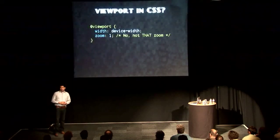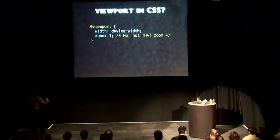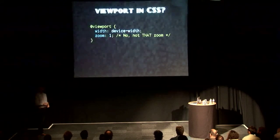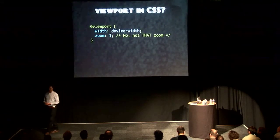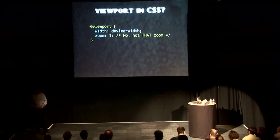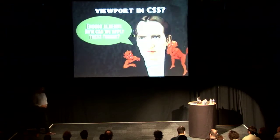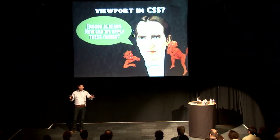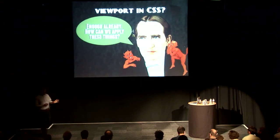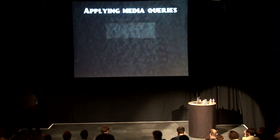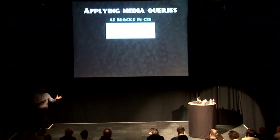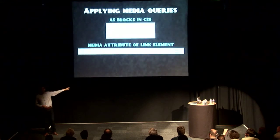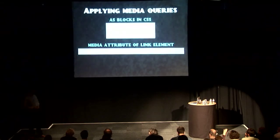Opera had a proposal to get viewport out of HTML and into CSS, which I think is not a bad idea — you put 'zoom' in there. I don't know how Internet Explorer will handle this, but it does the same thing as the meta element. So, how do we apply media queries? Here's where I want to start a little war between the performance people and everyone else. You could put the media queries in blocks in CSS, or put them in separate files — and that means more HTTP requests.